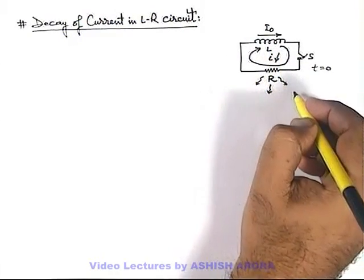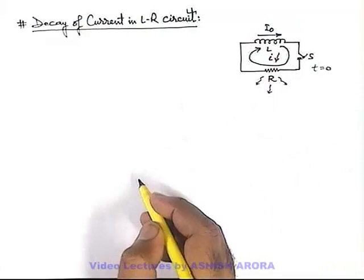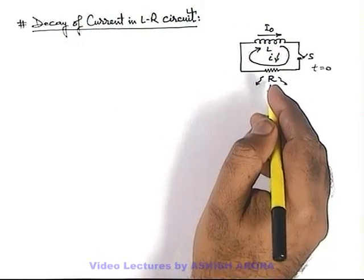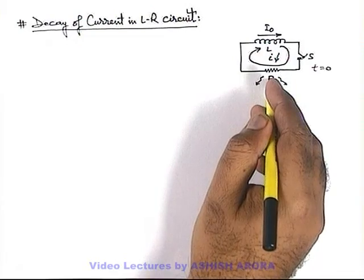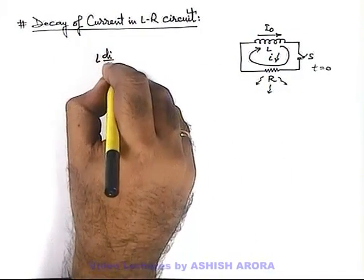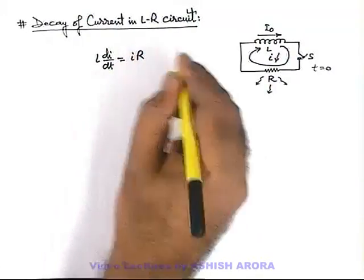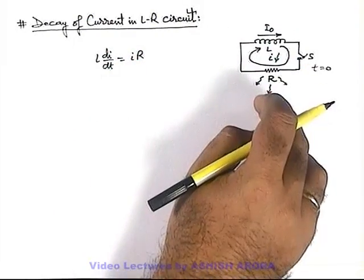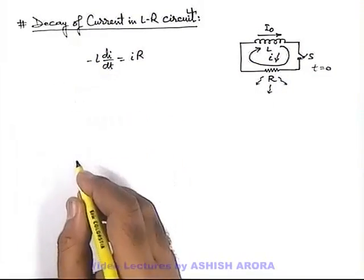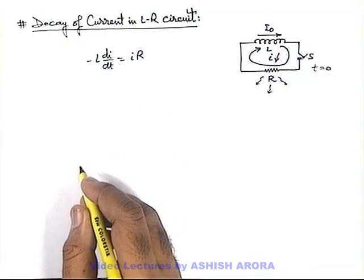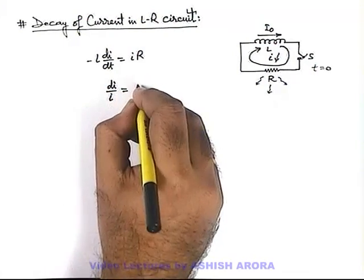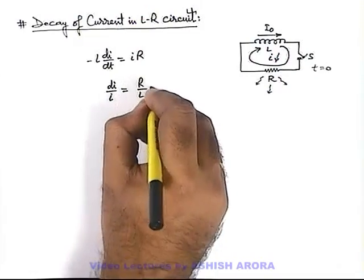Now in this situation, as the inductor is connected in parallel with the resistance, we can write L di/dt = iR. The potential difference of the two must be equal. Here, as current is decreasing with time, we must use this as minus L di/dt. In this situation, di/i can be written as -R/L dt.